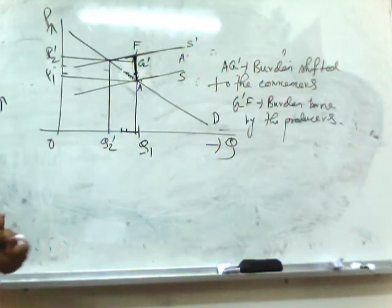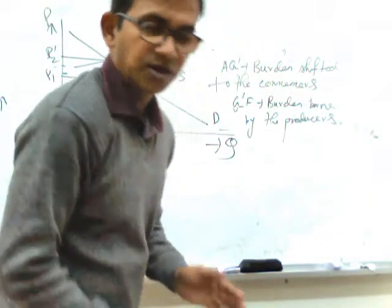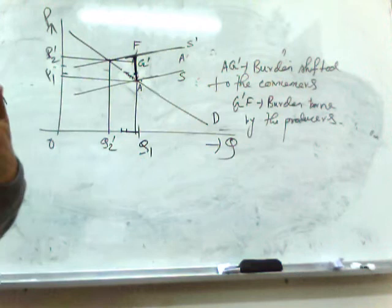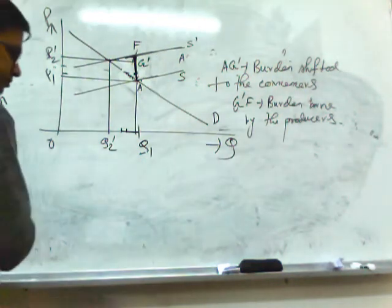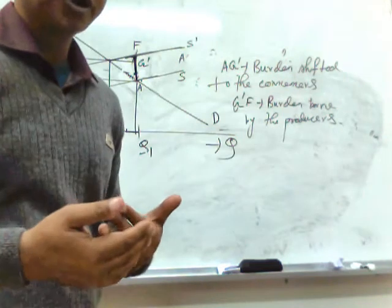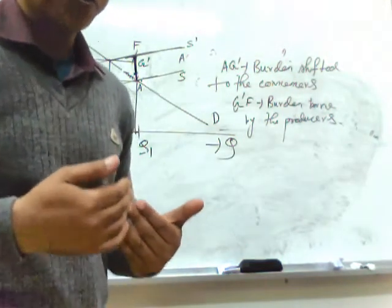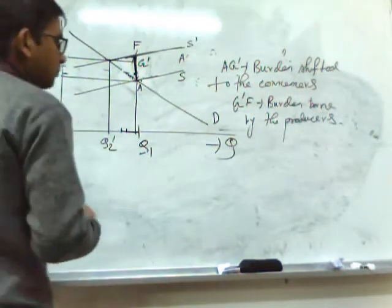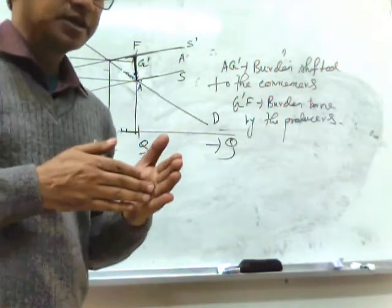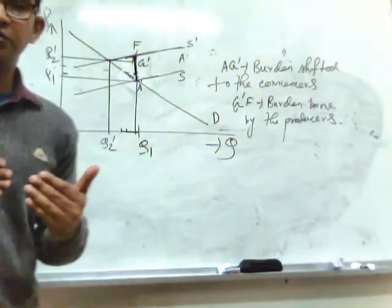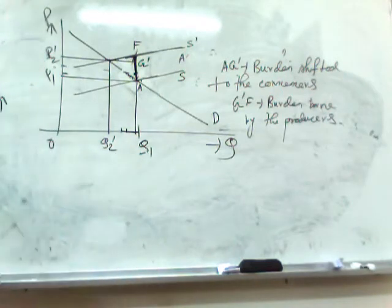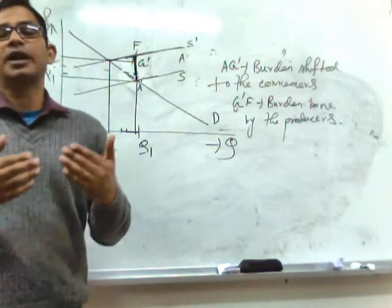From these four diagrams we have proved that whenever an indirect tax is imposed on producers, the volume or share of burden that can be transferred towards consumers is inversely related to price elasticity of demand and directly related to price elasticity of supply. Higher price elasticity of demand means lower burden can be shifted to consumers. Higher price elasticity of supply means a larger share of burden can be shifted towards consumers.